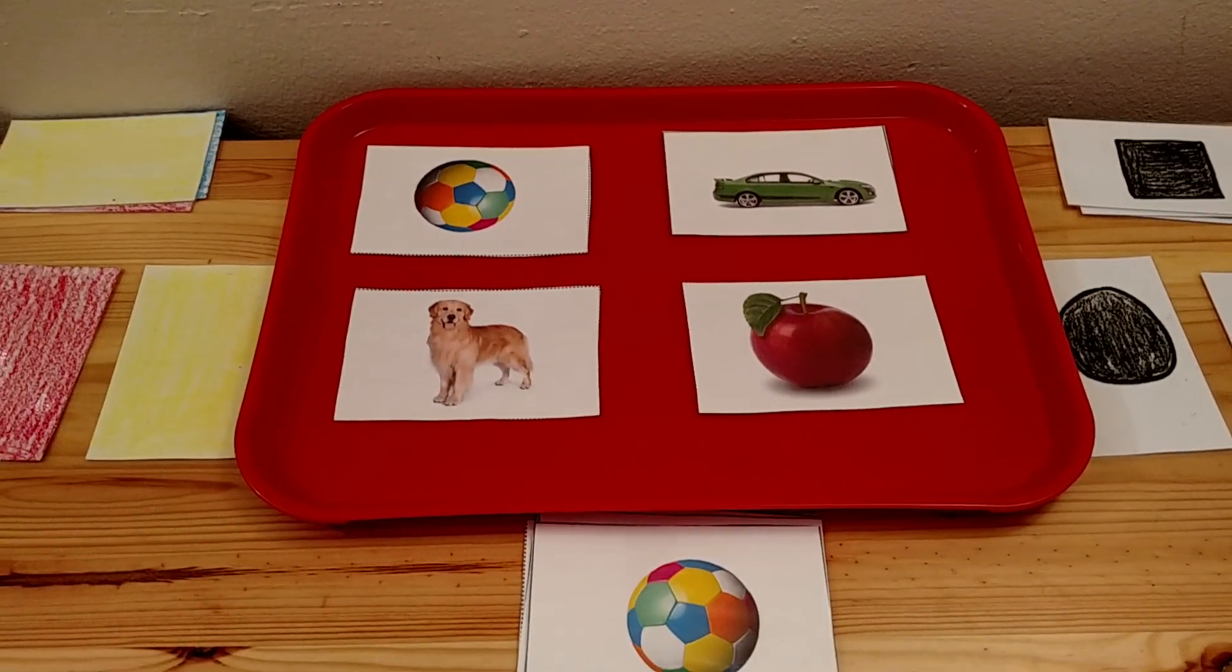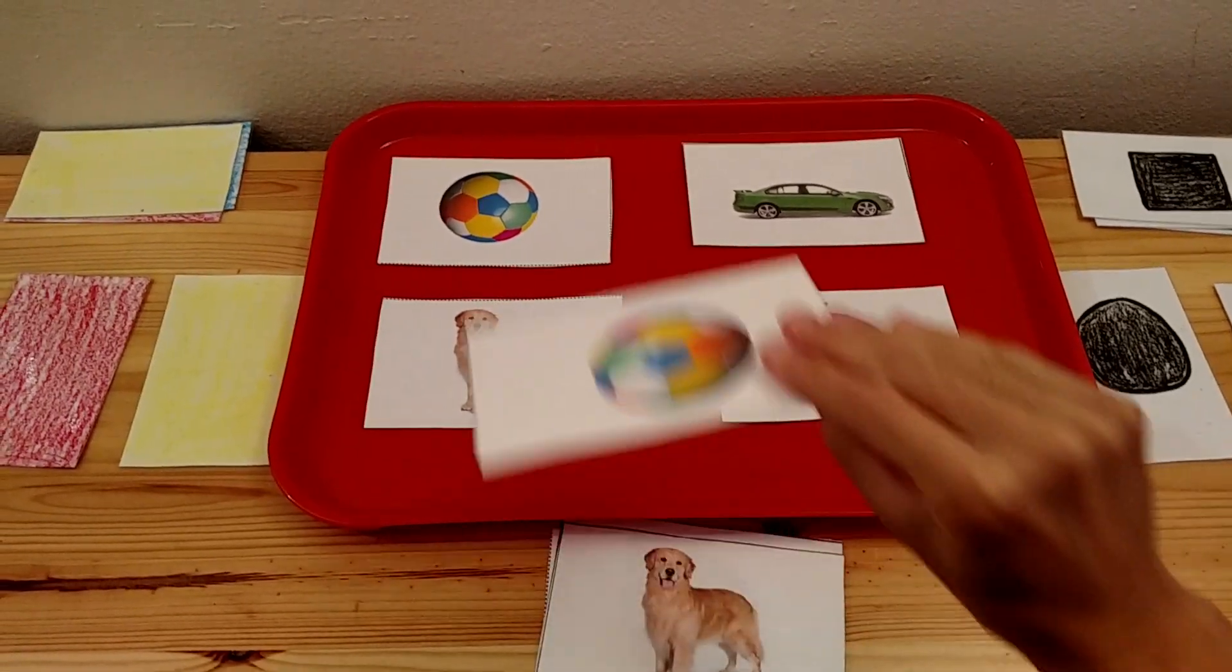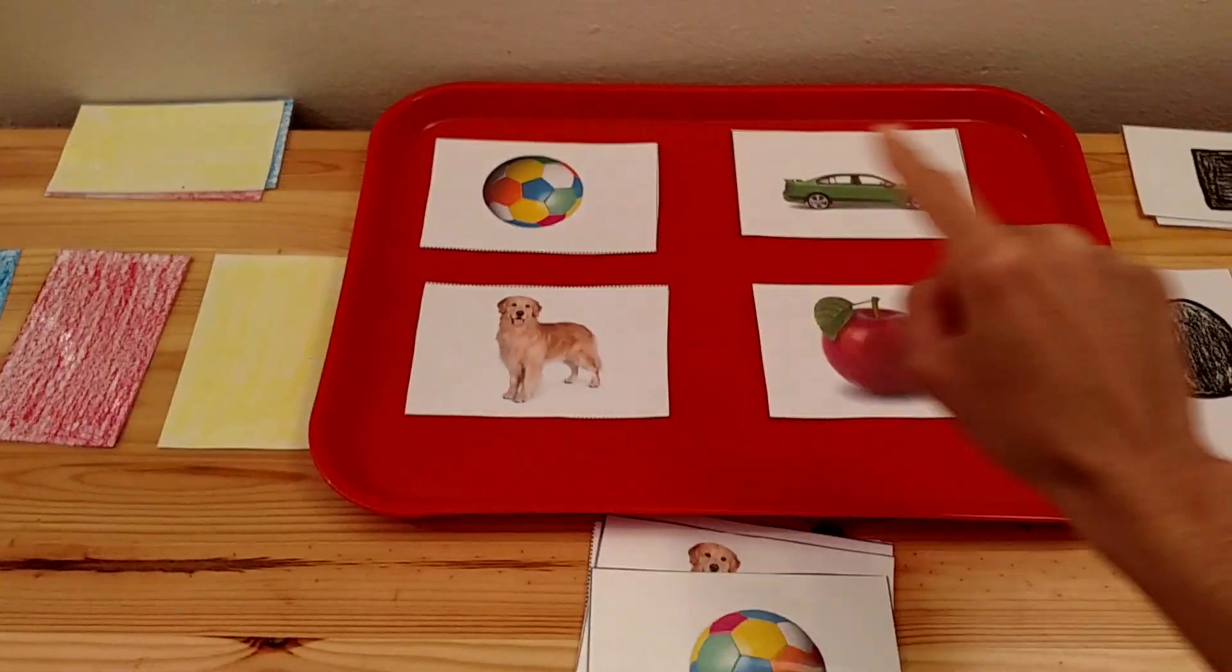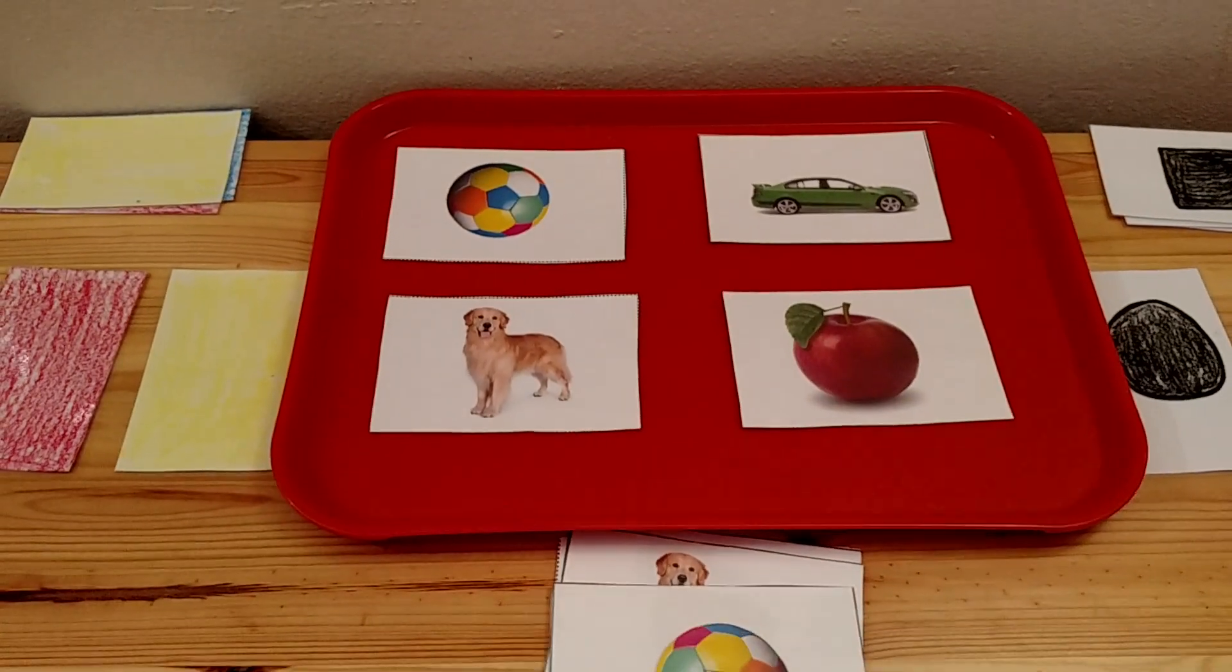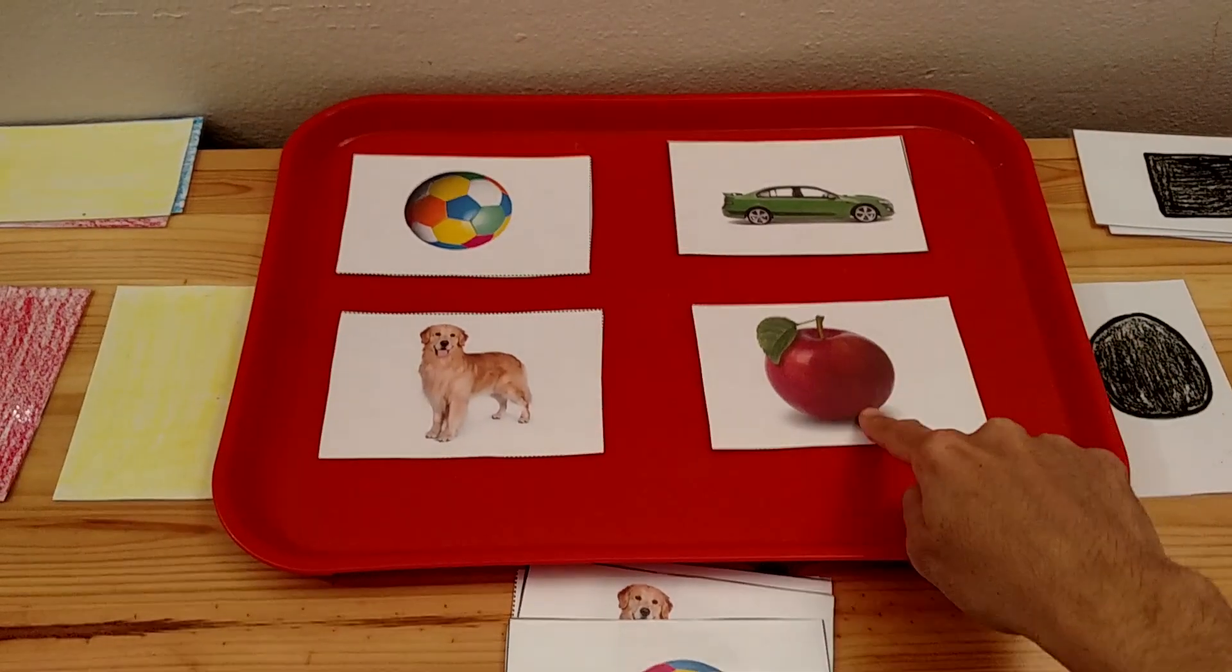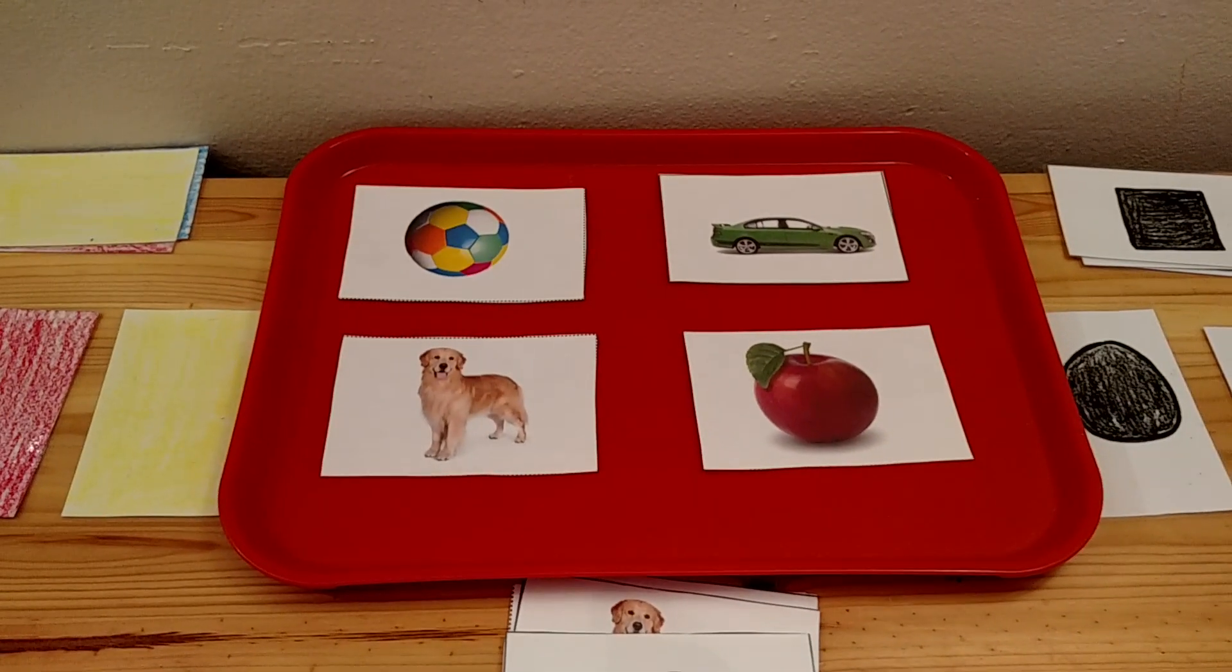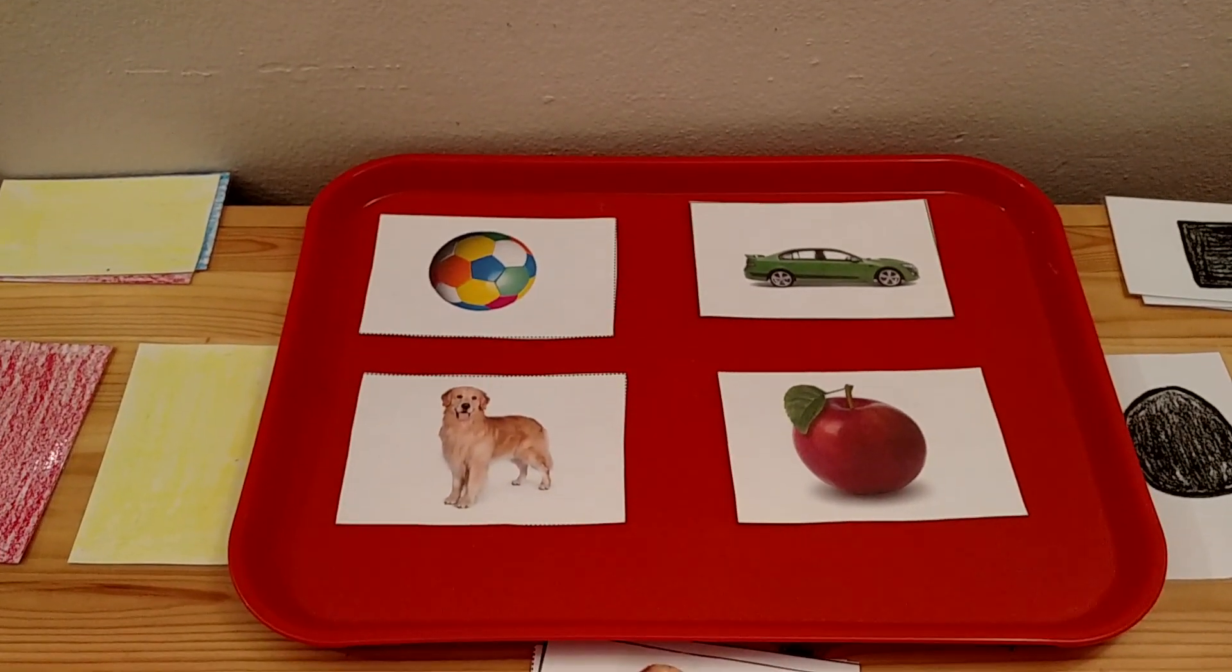Then you want the child to start pointing. Pointing comes before matching. The child should be able to know how to point. So then have the child point. Where is the apple? Where is the car? Where is the ball?